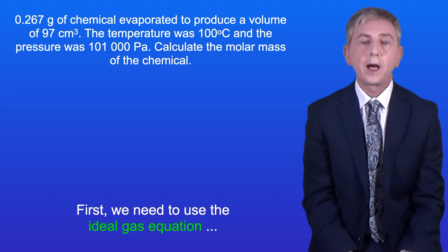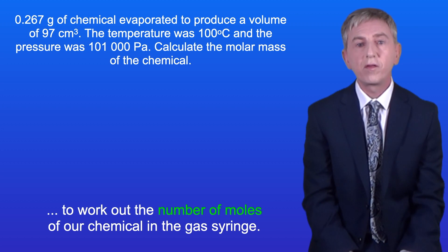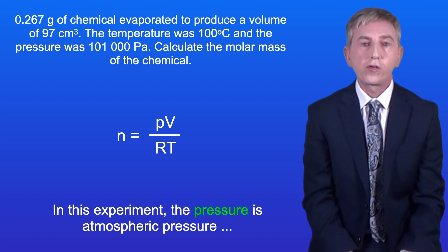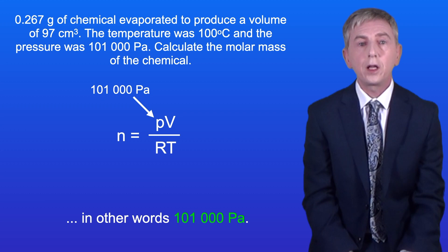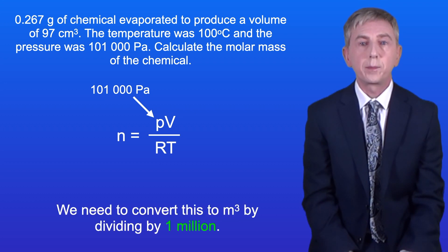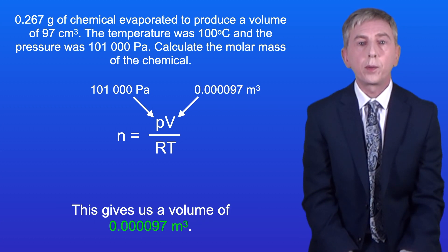First we need to use the ideal gas equation to work out the number of moles of our chemical in the gas syringe. I've rearranged the ideal gas equation for the amount of substance and moles here. In this experiment the pressure is atmospheric pressure, in other words 101,000 pascals. The gas volume was 97 centimeters cubed. We need to convert this to meters cubed by dividing by 1 million. This gives us a volume of 0.000097 meters cubed.